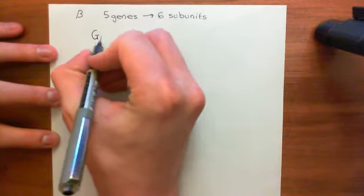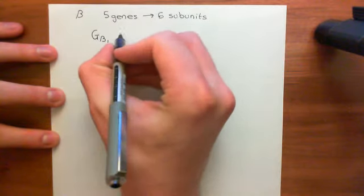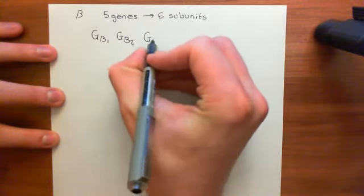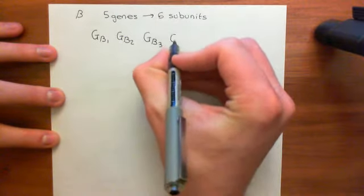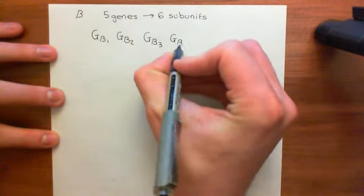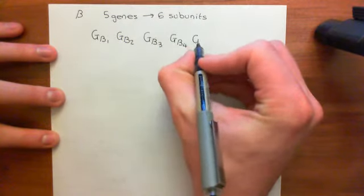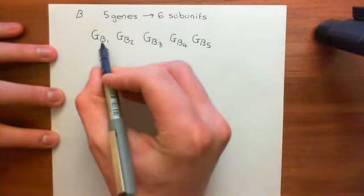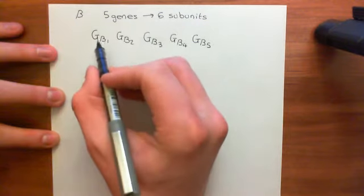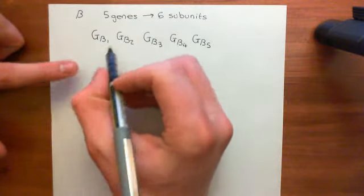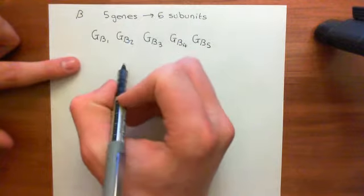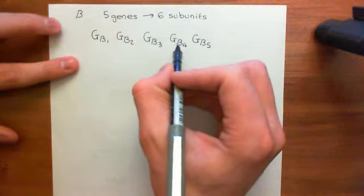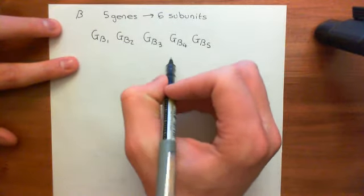The names of the genes are G-beta-1, G-beta-2, G-beta-3, G-beta-4, and G-beta-5. G-beta-1, G-beta-2, G-beta-3, and G-beta-4 all have a single splice variant, so they only code for a single protein. The G-beta-1 gene makes the G-beta-1 protein, G-beta-2 makes G-beta-2, G-beta-3 makes G-beta-3, and G-beta-4 makes G-beta-4.